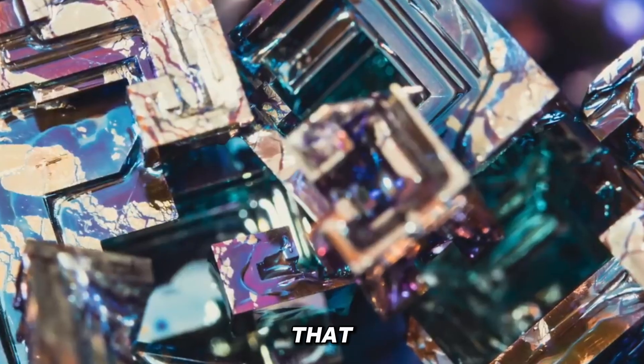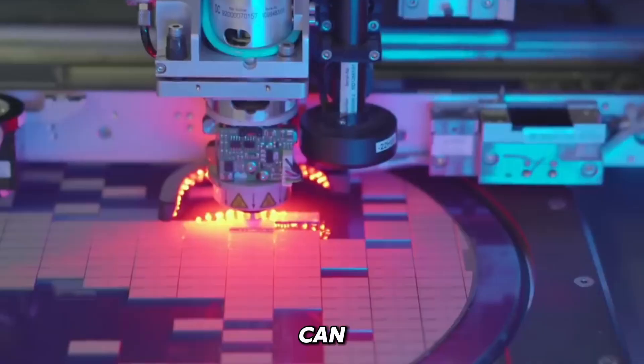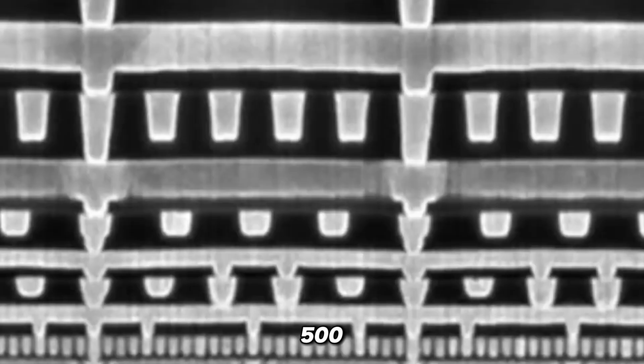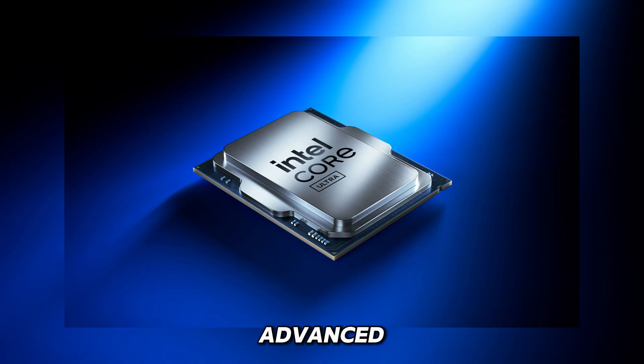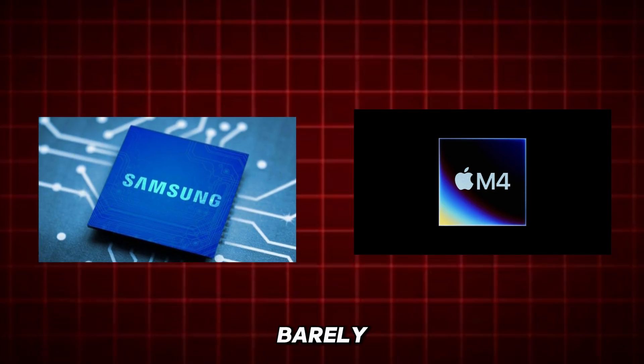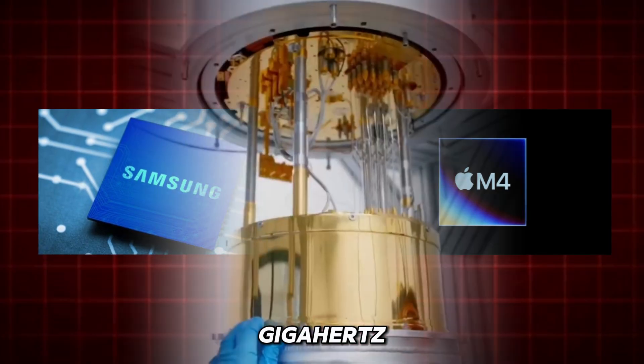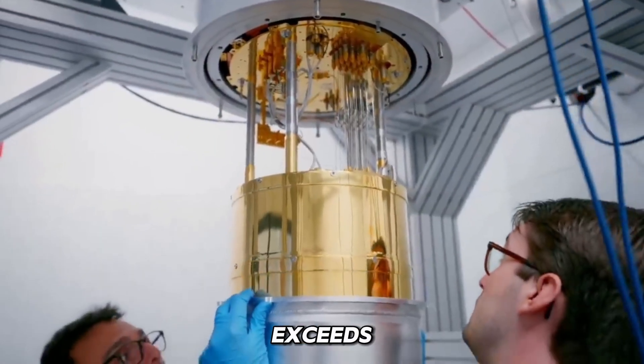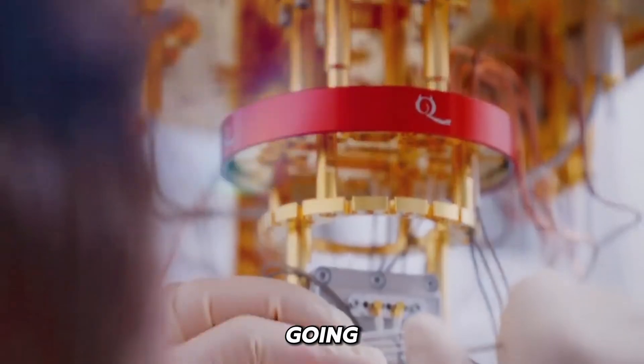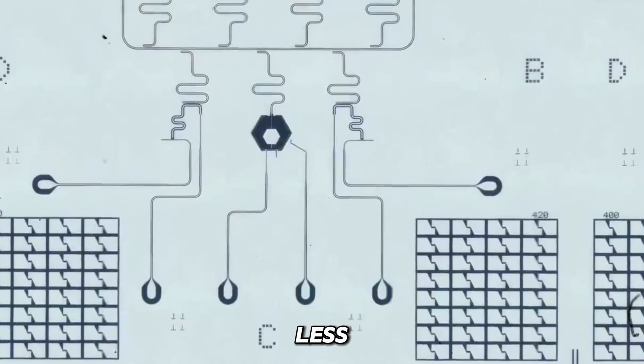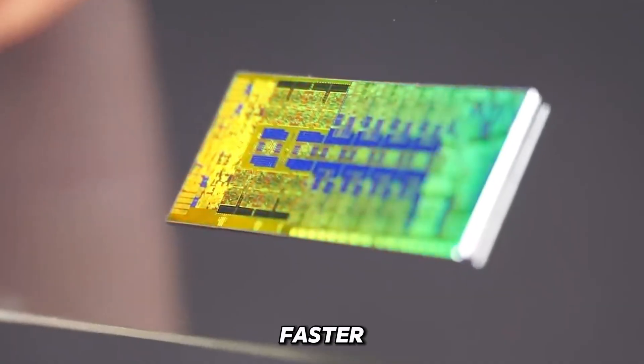Moreover, tests revealed that this doped bismuth chip can run at frequencies above 500 gigahertz. While the most advanced chips from Intel, Apple or Samsung barely hit 5 to 6 gigahertz, this prototype already exceeds 500 gigahertz and keeps going. It also uses 3 times less energy and has a 40% faster switching speed.